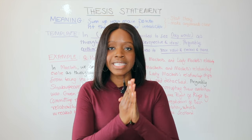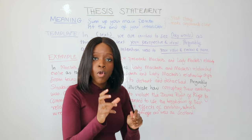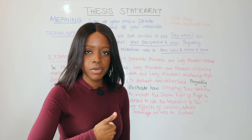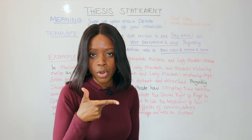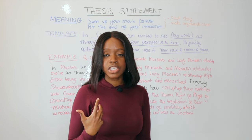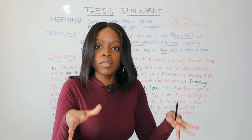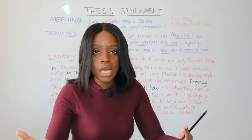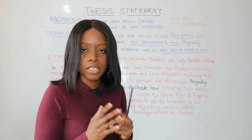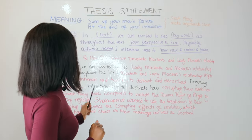In brief, what I've said in my main points is that Shakespeare uses their relationship to represent how terrible ambition is. The relationship goes from being really close to being distant, illustrating contextually how they violated the divine right of kings and caused chaos. Their ambition — the theme — caused chaos not only in Scotland but equally in their own relationship. That's how it changed.